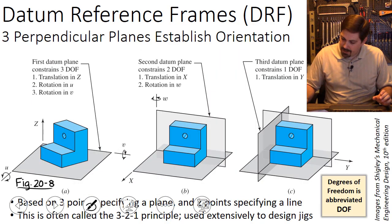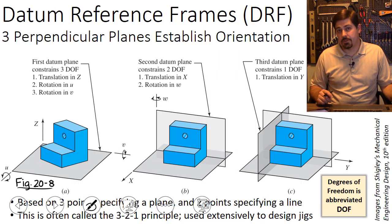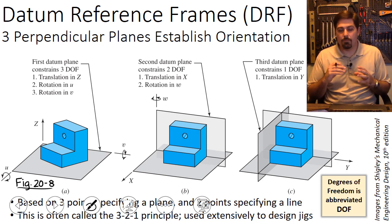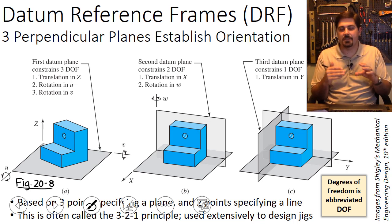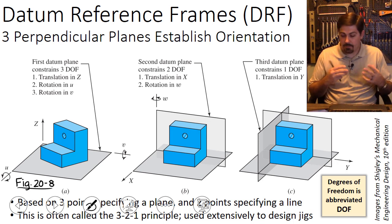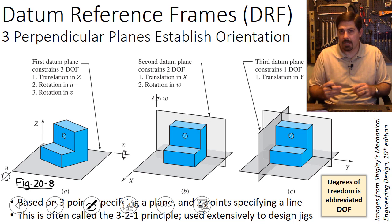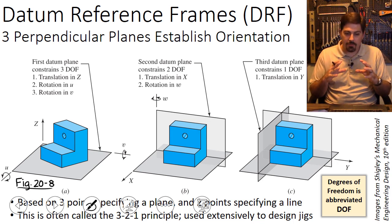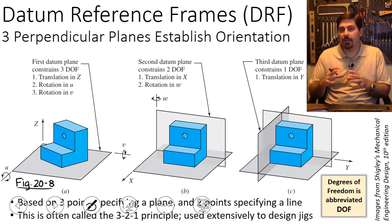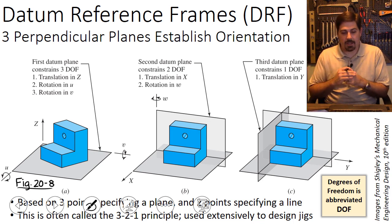Let's talk about datum reference frames. Sometimes features need more than just a single plane, axis, or point reference in order to know exactly where to place a feature or define its properties. You might need multiple references to fully define a feature. One key purpose of establishing datum reference frames is the idea of being able to immobilize the part sufficiently so that we can accurately make or inspect the features we're trying to define.